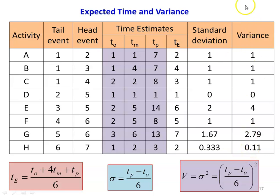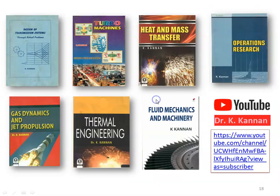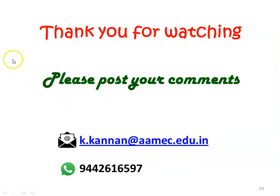These variances of various activities are useful for calculating the probability of completing the entire project work within a given time — we will use them in a future problem. These are all the books I have written on mechanical engineering subjects; you can find the Operations Research book for additional information on PERT-CPM. I upload video lectures on all subjects to my YouTube channel — please subscribe and use the videos for better learning. Thank you for watching. Contact me via email or WhatsApp for any clarification.